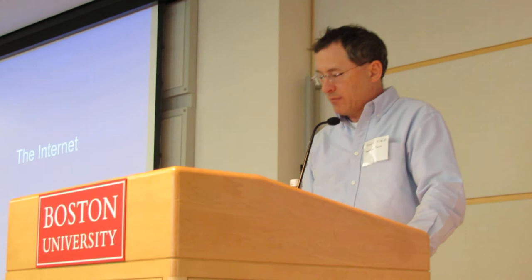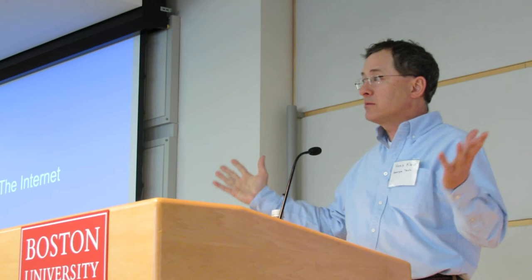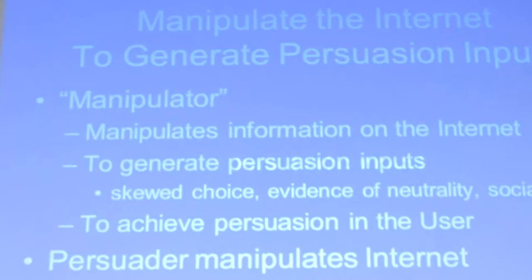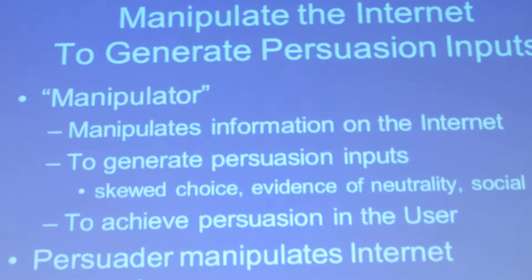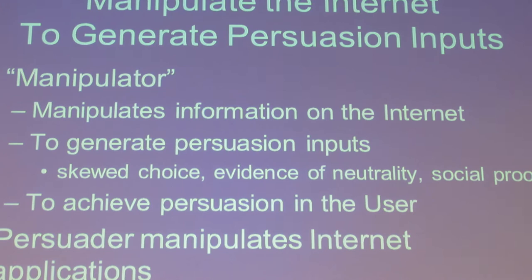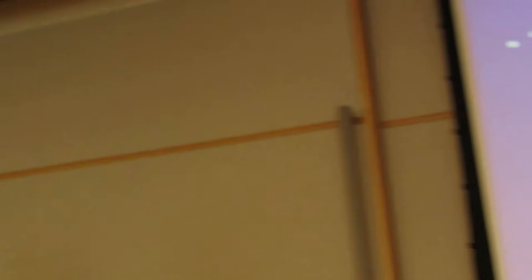We haven't talked about the internet yet — this stuff's been going on since Greek democracy, and Aristotle has a good textbook on it. Now let's bring it up to today. The challenge, if we still have the persuader trying to influence the user's mental states, is to manipulate the internet so that the person trying to influence me can manipulate data on the internet in such a way that it comes to me and influences me.